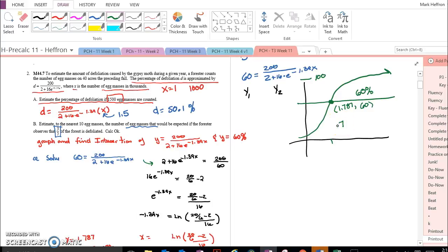And 1.787 is in thousands, so when we multiply that times 1,000, we have 1787. You've been asked to round to the nearest 10 egg masses, so that would be 1,790 eggs, which was the final answer.